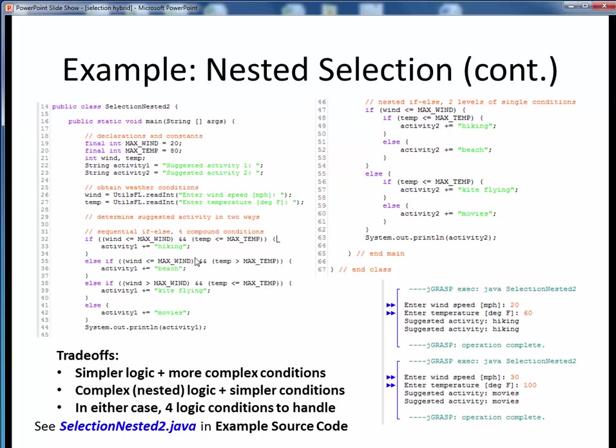In this first part, we have the first implementation using sequential if-else-if, with compound conditions to narrow down to one of the four possible cells. Whatever activity we determine is simply tacked on to the end of this activity-one string and printed out here.